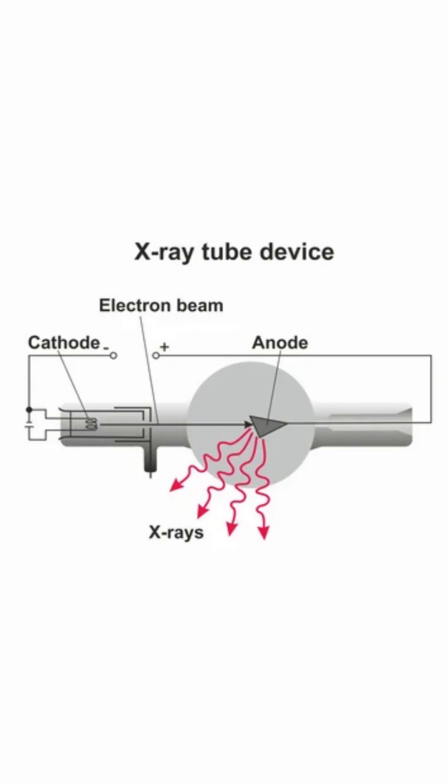These high energy electrons collide with the anode and release their energy as heat and more importantly as x-rays.